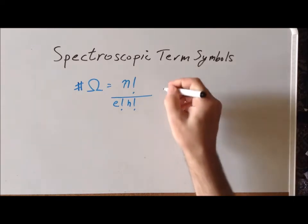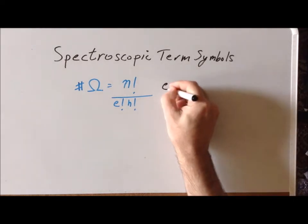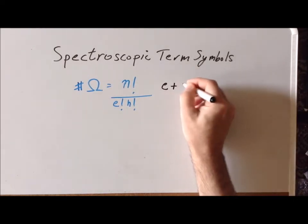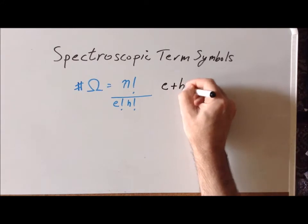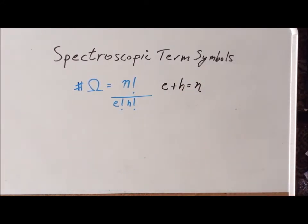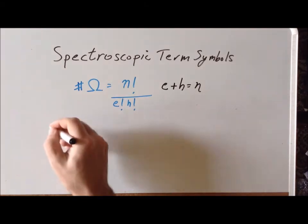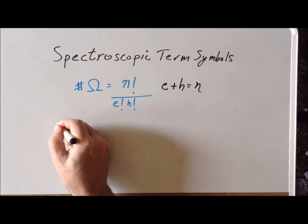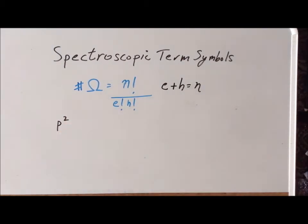It's set up such that the number of electrons plus the number of holes equals the number of possible positions. So we have that e plus h is equal to n. For our first example, we want to derive the spectroscopic term symbols for a p2 configuration.